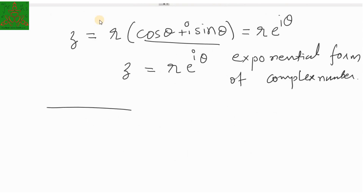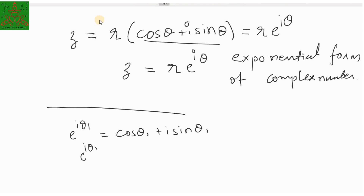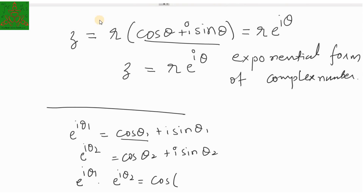Now let us consider two Euler formulas: e raised to iθ₁ equal to cos θ₁ plus i sine θ₁, and e raised to iθ₂ equal to cos θ₂ plus i sine θ₂. If I multiply these two identities, e raised to iθ₁ into e raised to iθ₂ will give you cos θ₁ multiplied by cos θ₂.